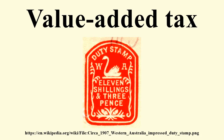The seller charges VAT to the buyer and the seller pays this VAT to the government. If, however, the purchaser is not an end user, but the goods or services purchased are a cost to its business, the tax it has paid for such purchases can be deducted from the tax it charges to its customers. The government only receives the difference — it is paid tax on the gross margin of each transaction. In many developing countries such as India, sales tax and VAT are key revenue sources as high unemployment and low per capita income render other income sources inadequate. However, there is strong opposition to this by many sub-national governments as it leads to an overall reduction in the revenue they collect, as well as some loss of autonomy.